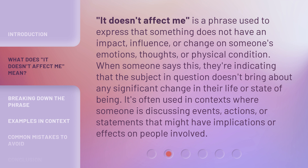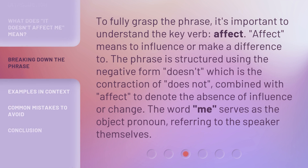It's often used in contexts where someone is discussing events, actions, or statements that might have implications or effects on people involved. To fully grasp the phrase, it's important to understand the key verb 'affect.' Affect means to influence or make a difference to. The phrase is structured using the negative form 'doesn't' — the contraction of 'does not' — combined with 'affect,' to denote the absence of influence or change. The word 'me' serves as the object pronoun, referring to the speaker themselves.